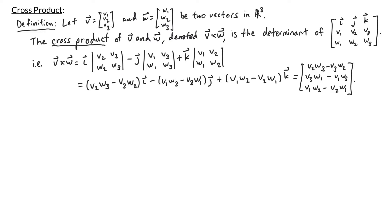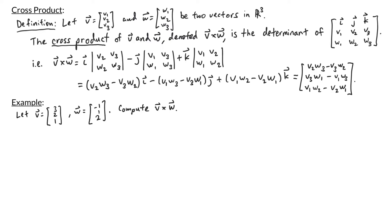Let's now look at an example. Here v is the vector (3, 2, 1) and w is the vector (-1, 1, 2). We're asked to compute v cross w. So v cross w is the determinant of the matrix with first row i, j, k, second row 3, 2, 1, and third row -1, 1, 2.